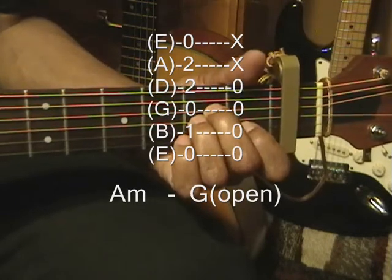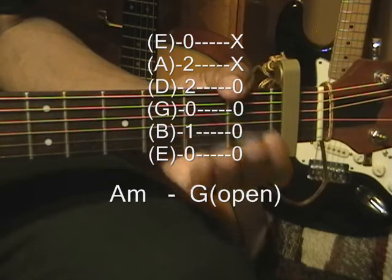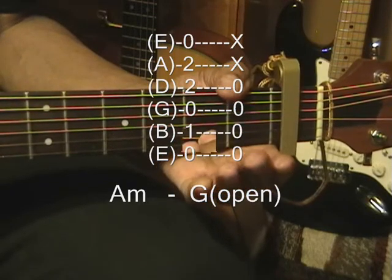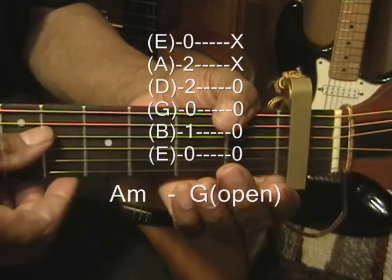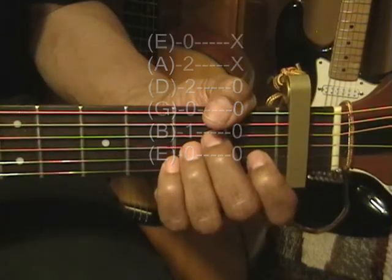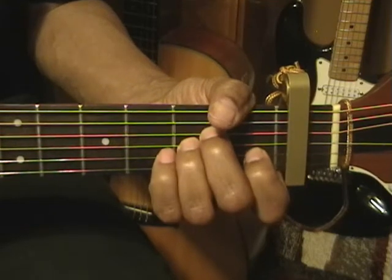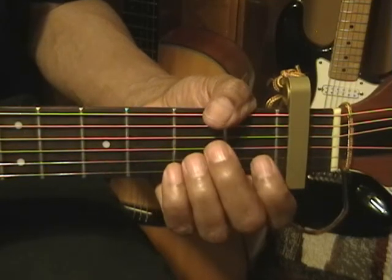We can go to an open G chord by simply taking our fingers off the fretboard, like that. And that's a G chord from the D string down. We can strum the A minor chord and open it up to that G to get that effect.